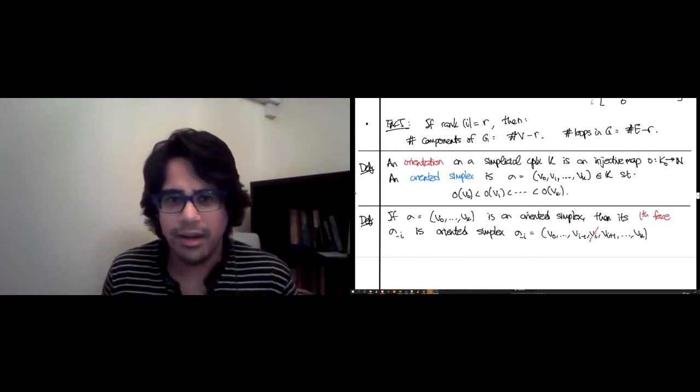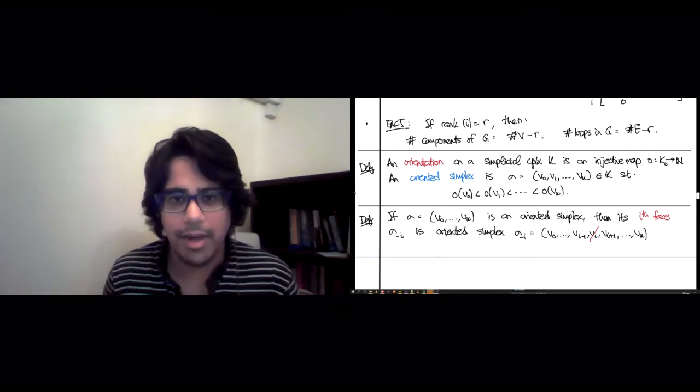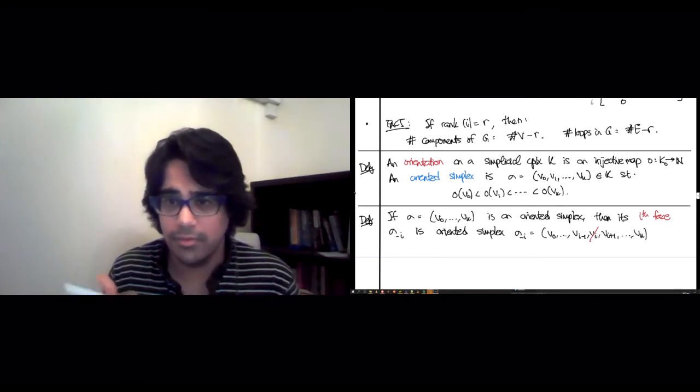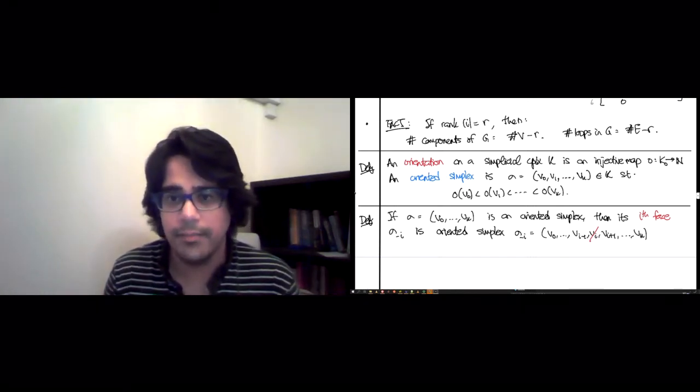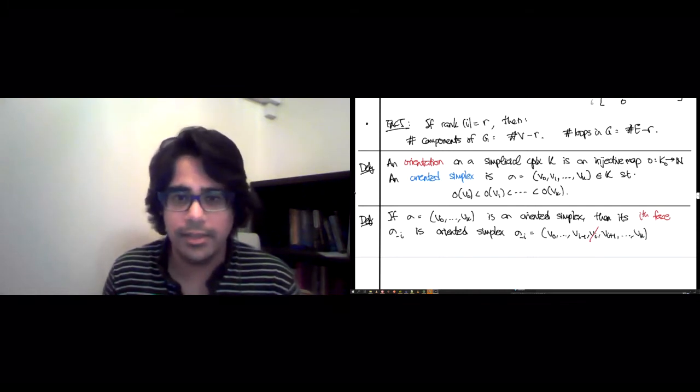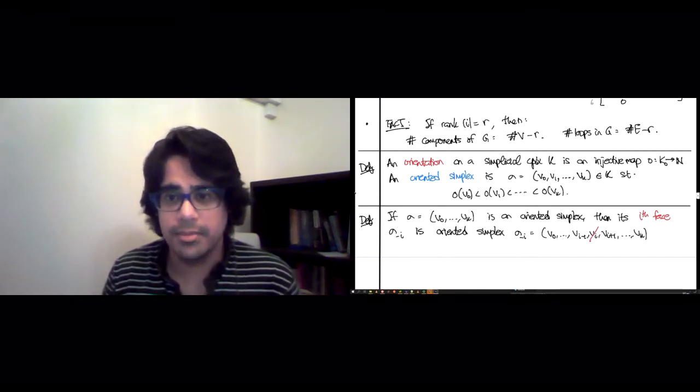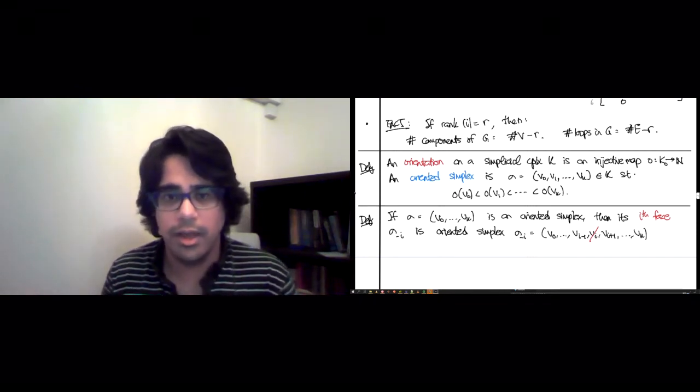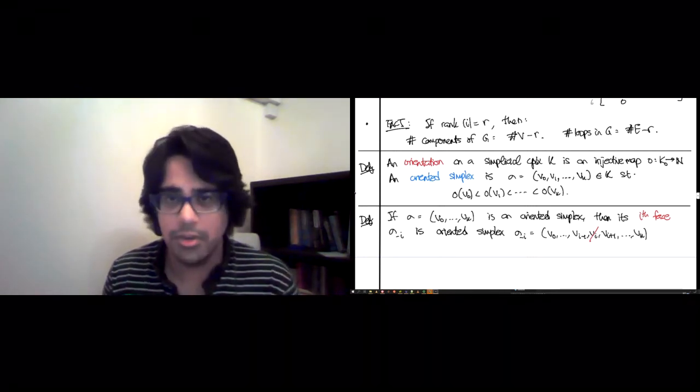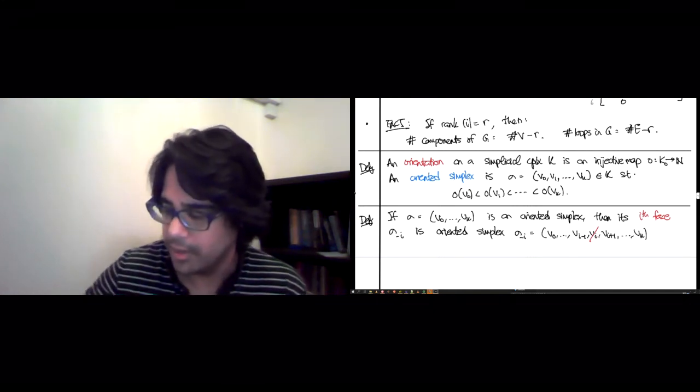So the things to check are: this is a K minus one dimensional simplex, of course it is, it has K vertices in it. And the other thing to check is that this is also oriented. Well, we stuck out one of the simplices, but we never changed the orientation imposed order. So this is still an oriented simplex. This is a well-defined map.